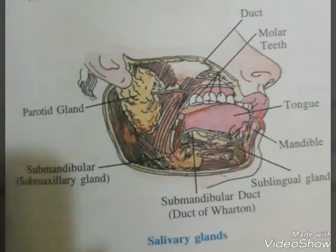Pancreatic juice and bile are released through the hepatopancreatic duct. The pancreatic juice contains inactive enzymes: trypsinogen, chymotrypsinogen, procarboxypeptidase, amylase, lipase, and nucleases. Trypsinogen is activated by the enzyme enterokinase, secreted by the intestinal mucosa, into the active form trypsin, which in turn activates the other enzymes in the pancreatic juice.